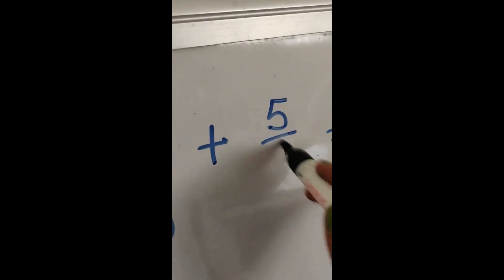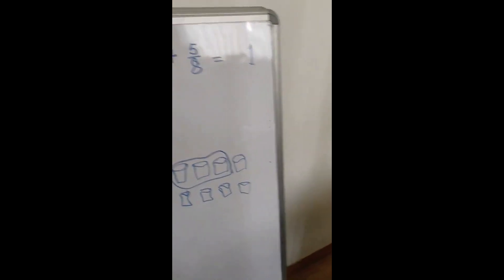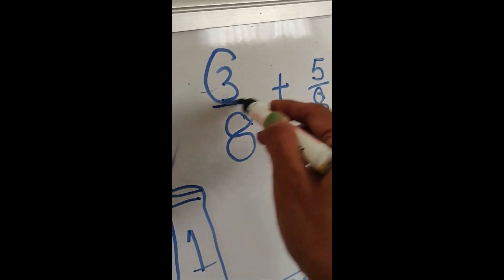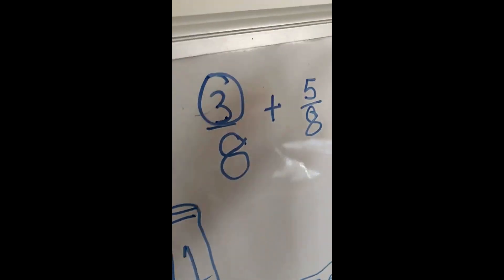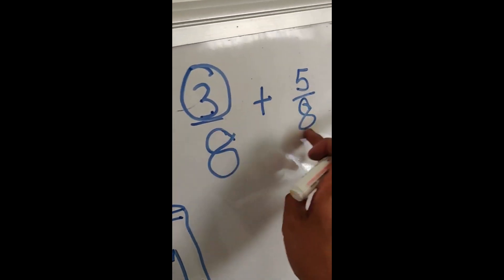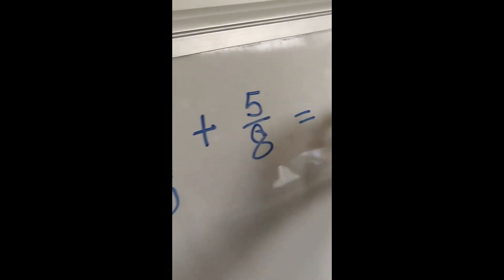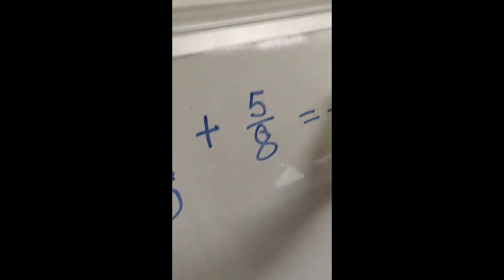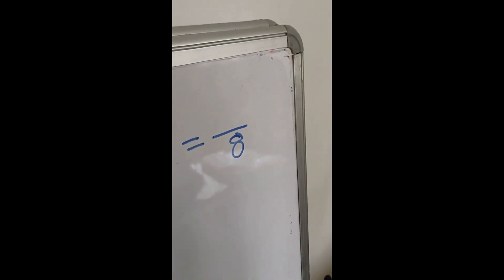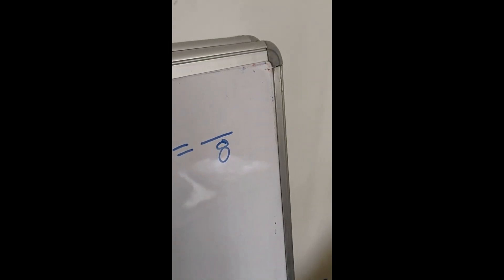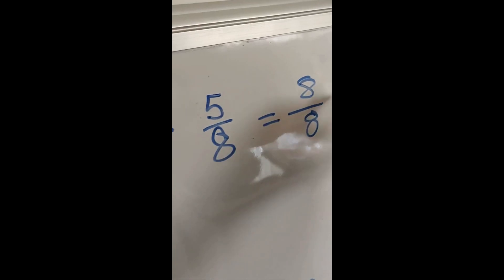So every time you have to make something whole, what you have to do? The number of pieces here, you will add so many more that upar neche becomes same. See, 8 and 8 neche same hai toh, and 3 or 5, 3 or 5 is 8, 8 upon 8, whole.